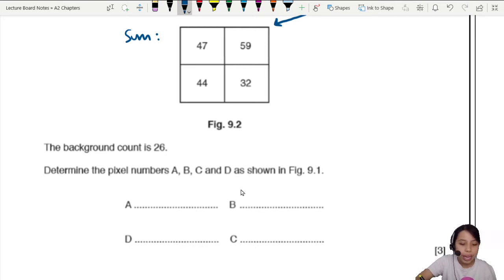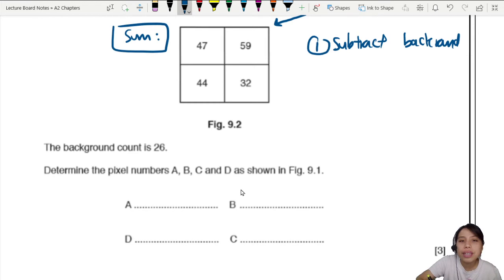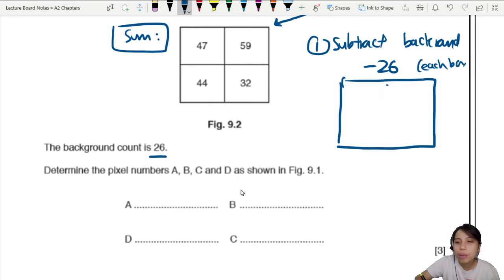The first step you need to do is to subtract the background. So I'm going to write that down. Step one, subtract background. This is if you already have the sum value, which is this box. So what's the background? From each box. Might as well draw a box. Three marks better shows I'm working to show that I really know what I'm doing.